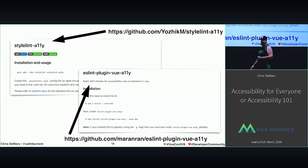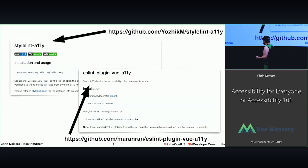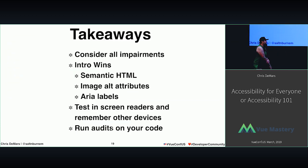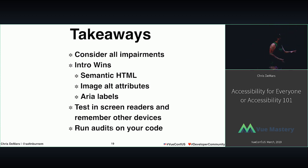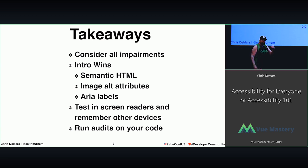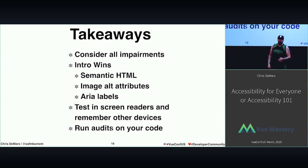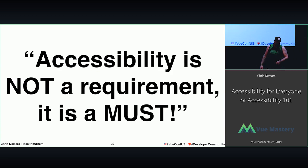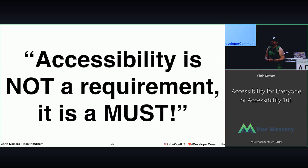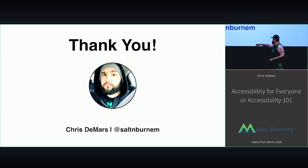For Vue, you can have different plugins for linting and checking your accessibility within your code editor. Some takeaways I want everyone to walk away with: consider all five impairments. Intro wins — semantic markup, alt attributes on your images, ARIA labels when you need them. Test in screen readers and remember other assistive devices like Sip and Puff machines and Braille machines. Run audits on your code using Lighthouse. And my quote: accessibility is not a requirement — it is a must. It is your job as a worker on the web to care.